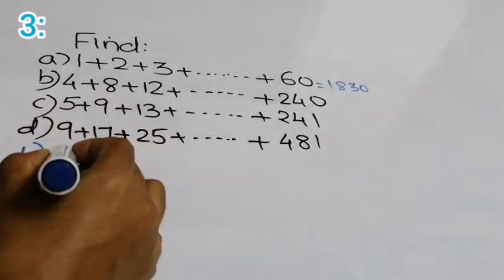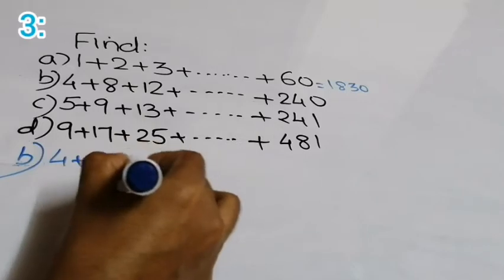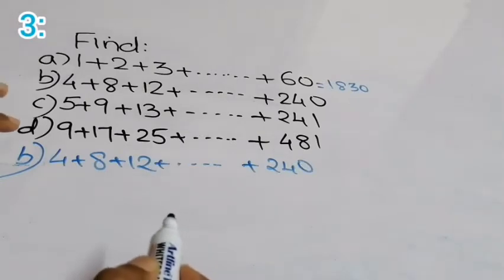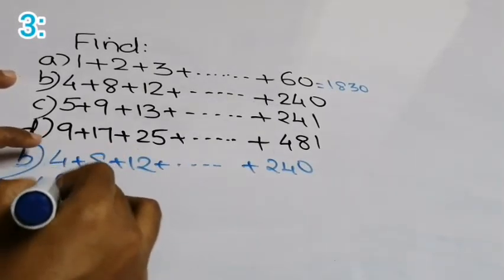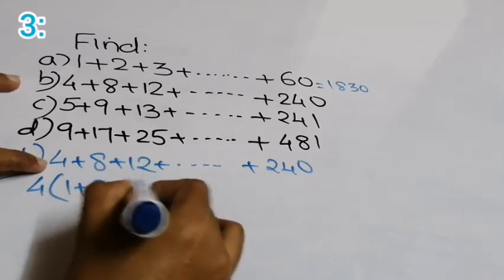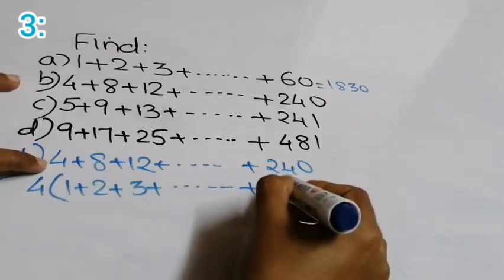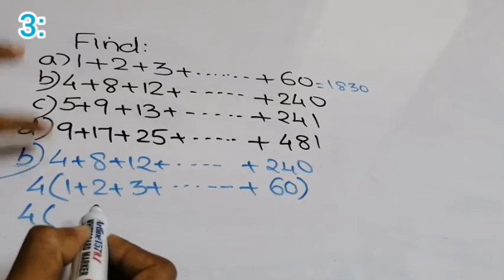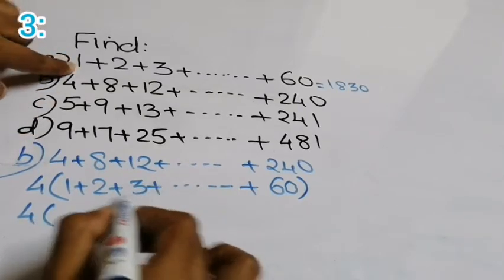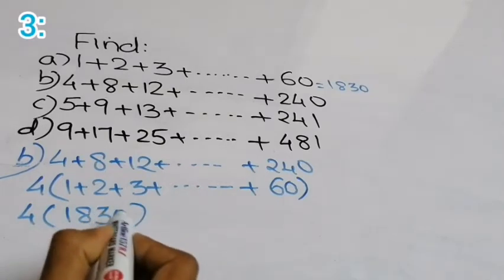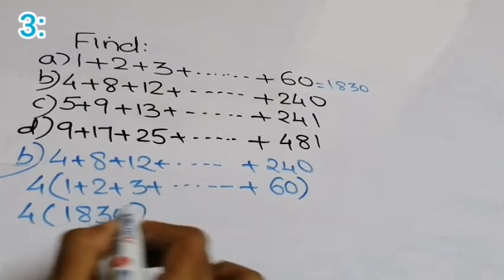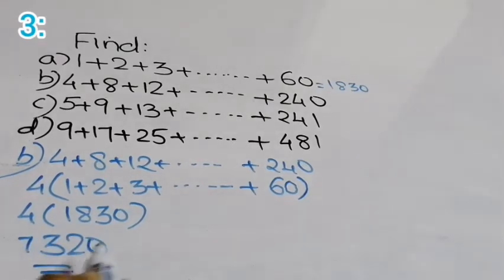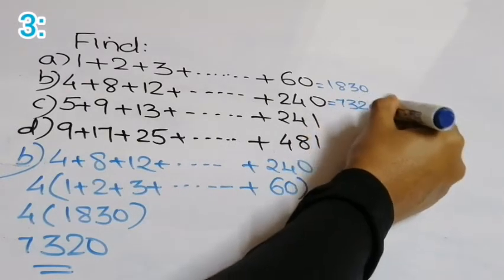Part B: 4 plus 8 plus 12 up to 240. These are multiples of 4 — 4 times 1 is 4, 4 times 2 is 8, 4 times 3 is 12, up to 4 times 60 is 240. Inside the bracket we have 1 plus 2 plus 3 up to 60, which equals 1,830. So the answer is 4 times 1,830, which equals 7,320.